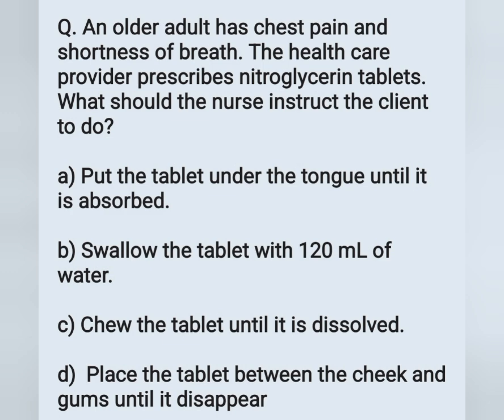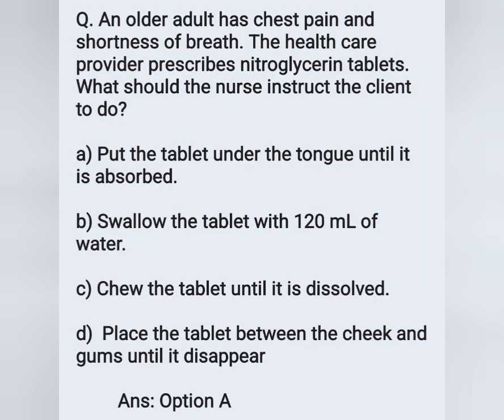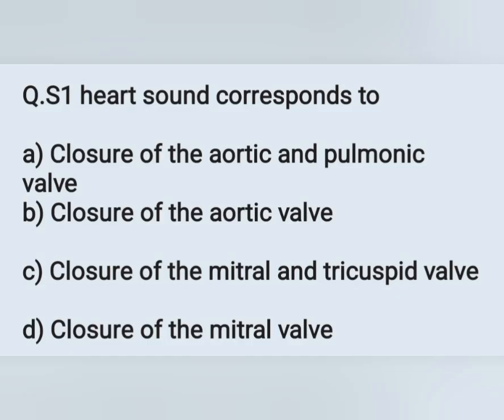The older client with chest pain is prescribed a nitroglycerin tablet. The nurse instructs the patient to place the tablet sublingually — under the tongue — until it is absorbed, as this route allows for rapid absorption. The correct answer is option A.